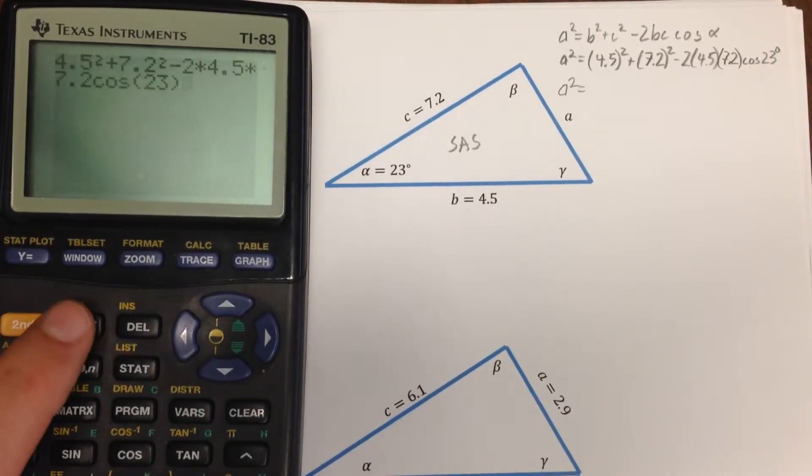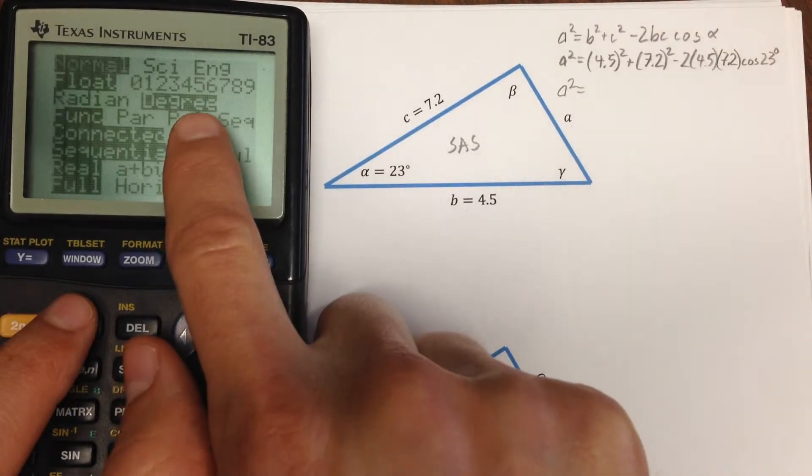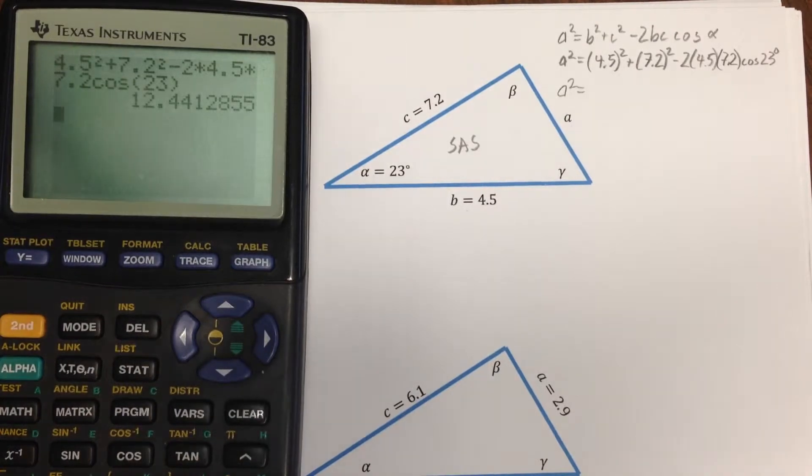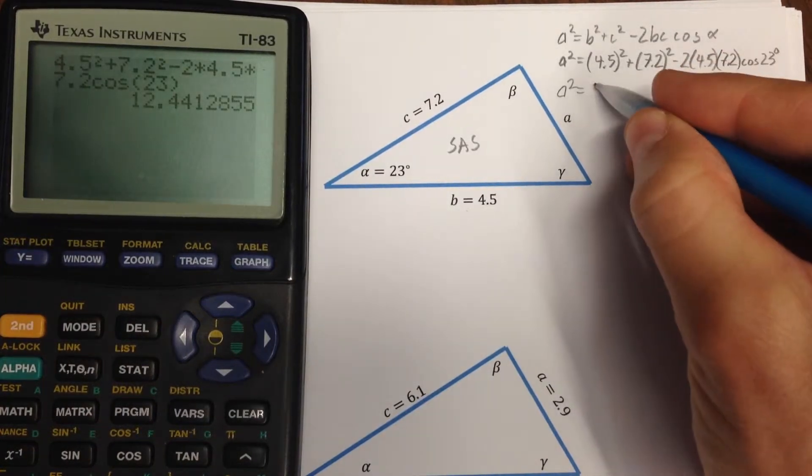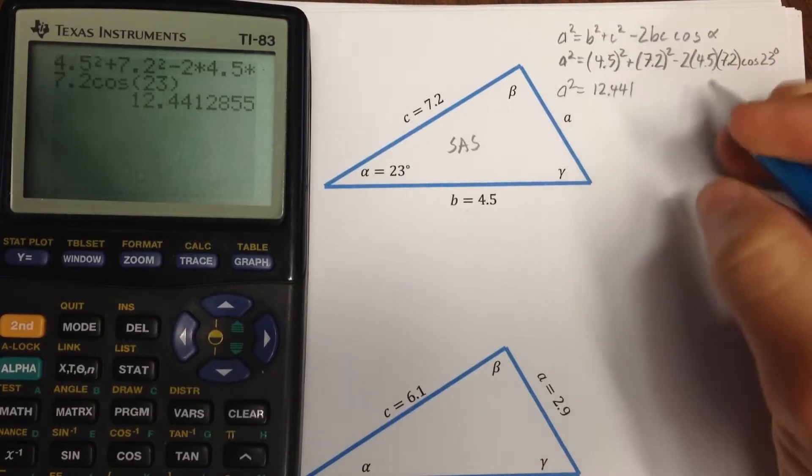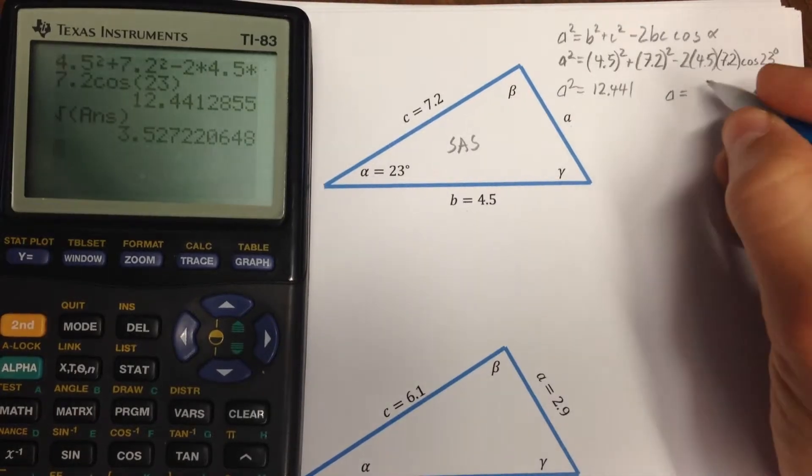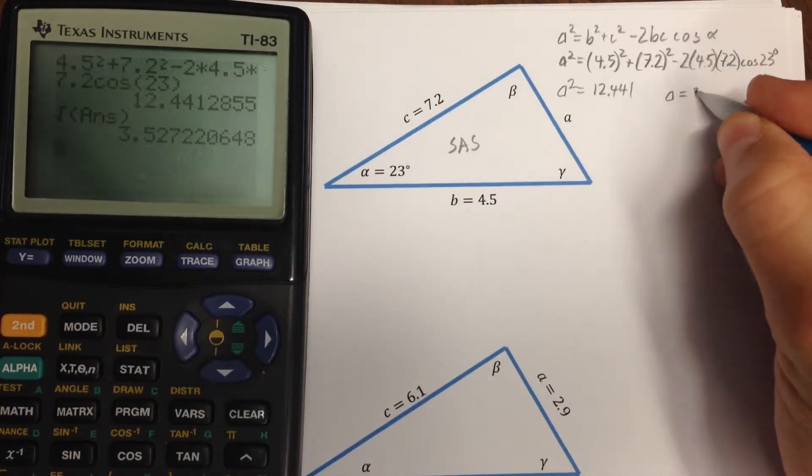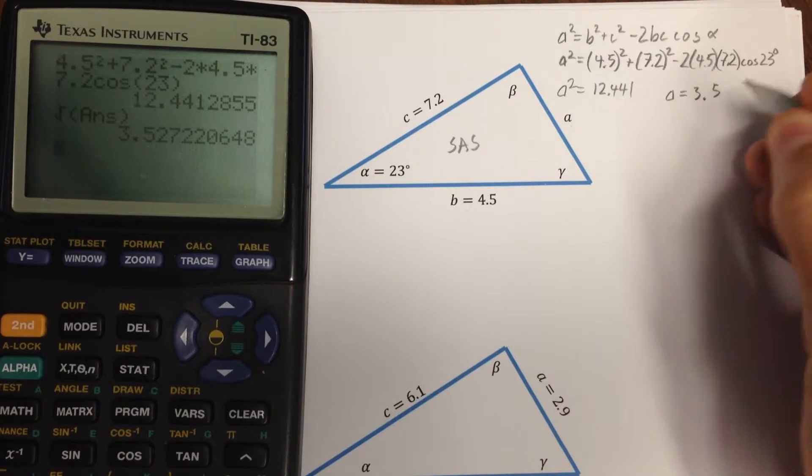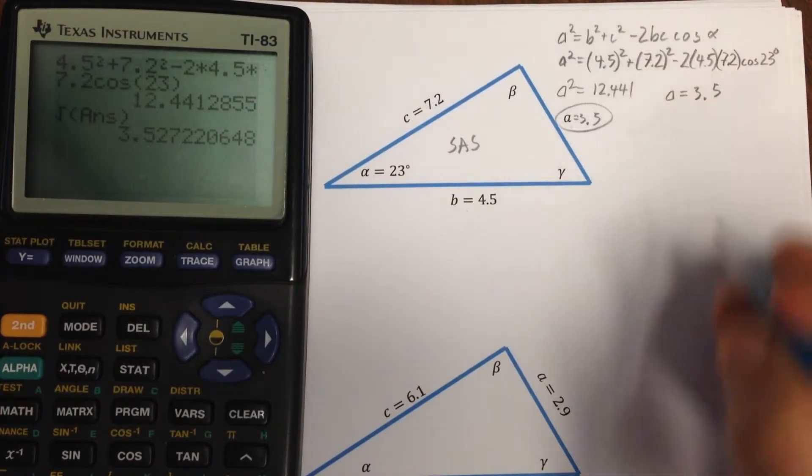Now you want to, before you press enter, you want to make sure in mode you're in degrees mode. Okay, but once you're there, you can get out a value here, 12.441. And of course I'm going to take the square root of that, so square root of answer. And I'll round that off to 3.5.